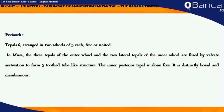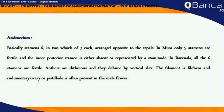Tepals free or united. In Musa, the three tepals of the outer whorl and the two lateral tepals of the inner whorl are fused by valvate aestivation to form a five-lobed tube-like structure. The inner posterior tepal is alone free; it is distinctly broad and membranous.